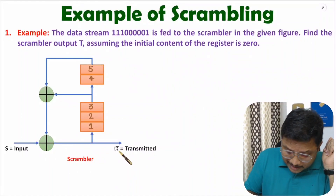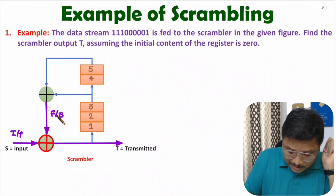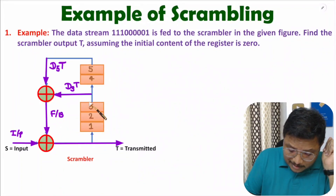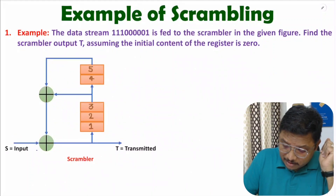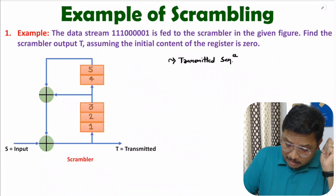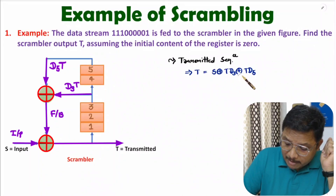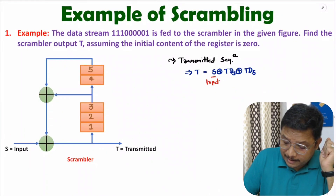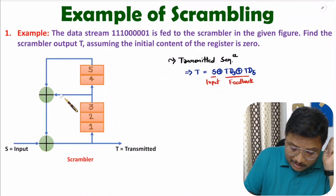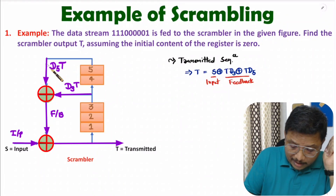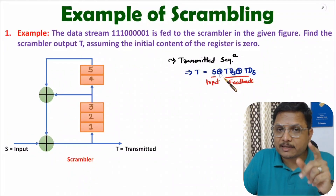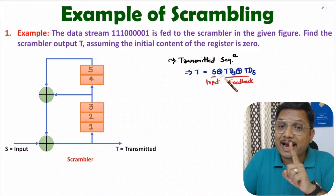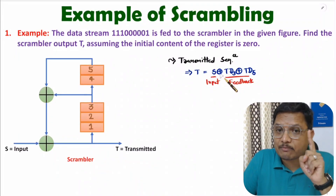If you observe, the output T is the modulo-2 addition of input and feedback. The feedback is D3·T plus D5·T. So my transmitted sequence T equals input S plus feedback, which is T·D3 plus T·D5. Always remember here 'plus' means modulo-2 addition, that is XOR operation — it is not regular addition.